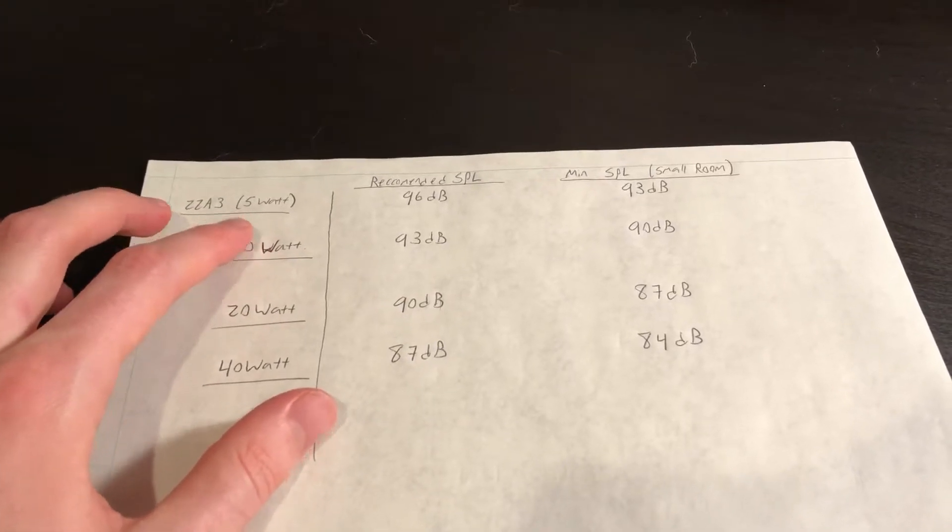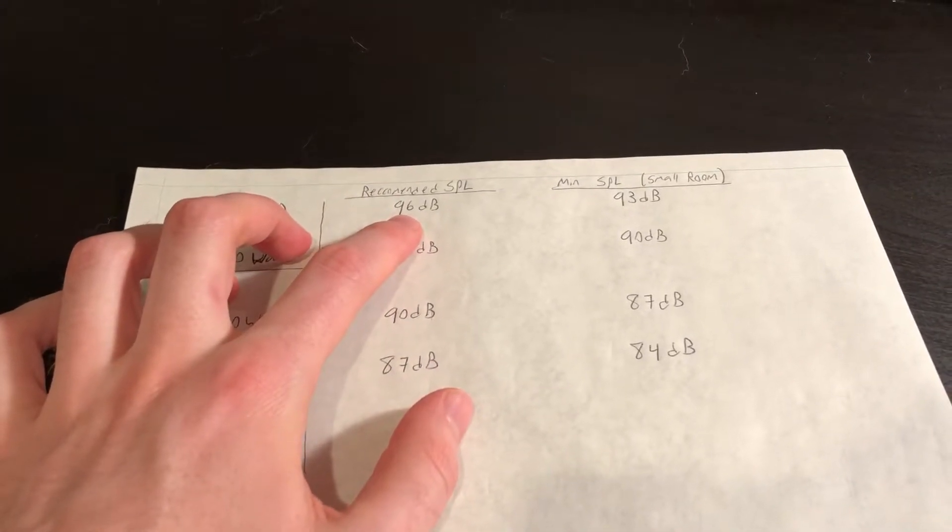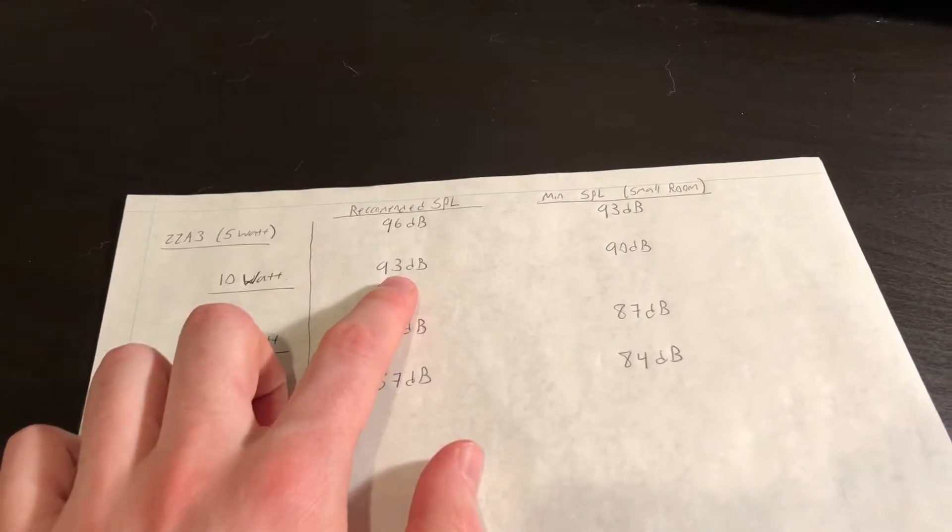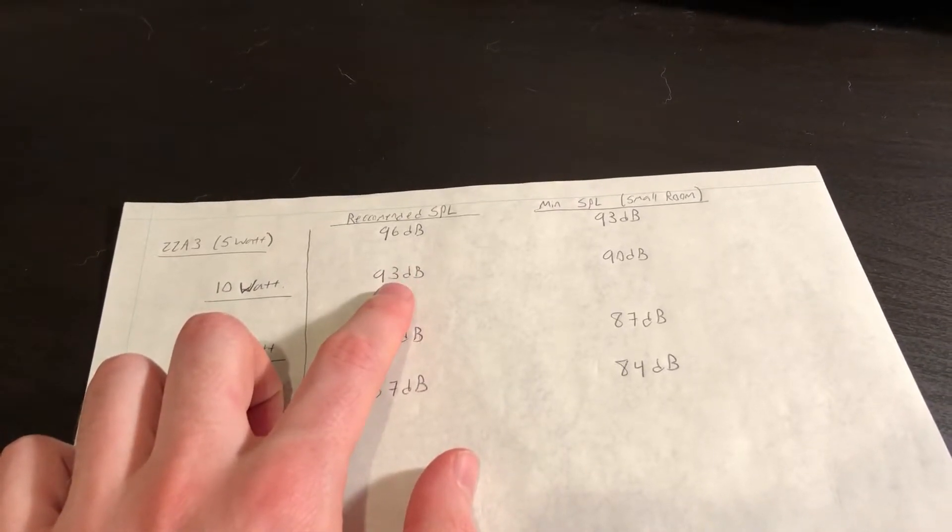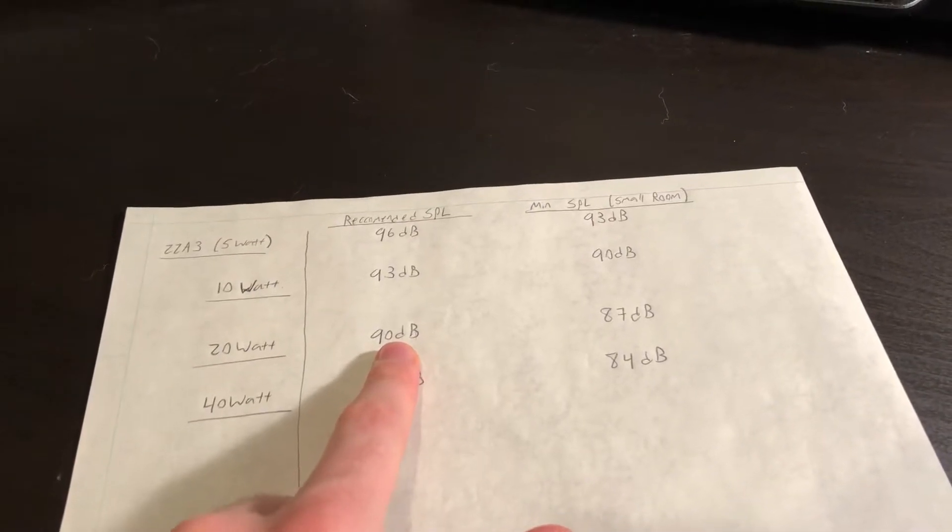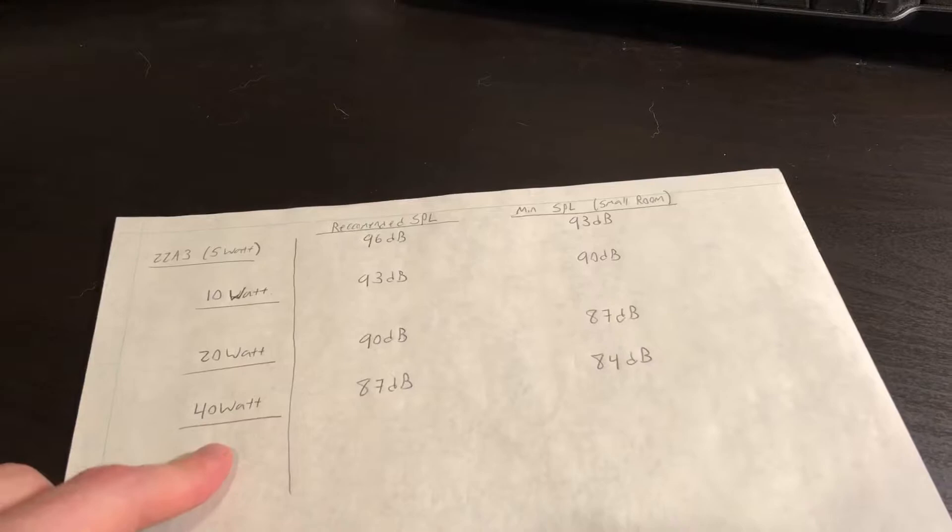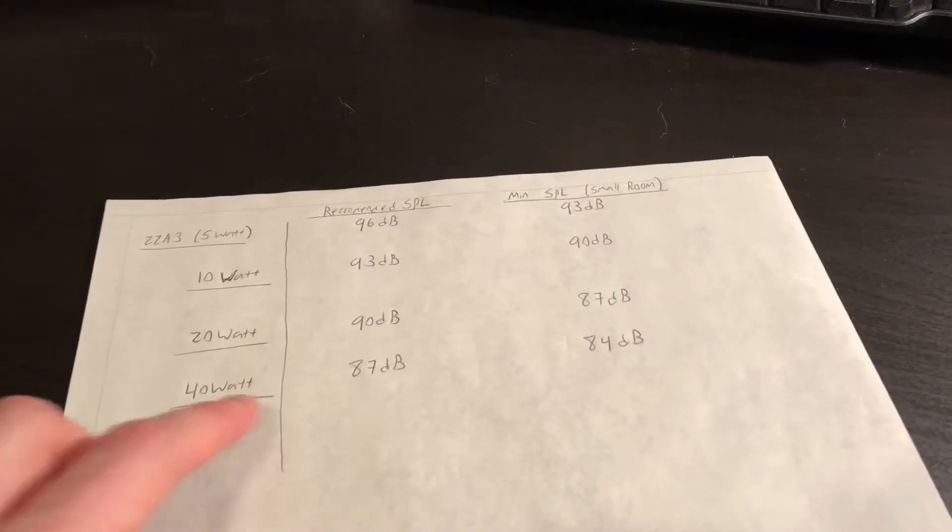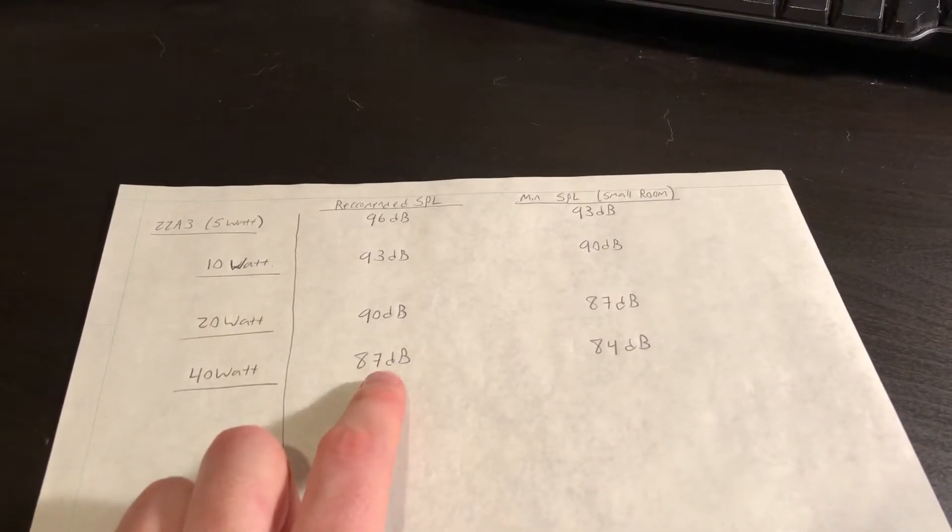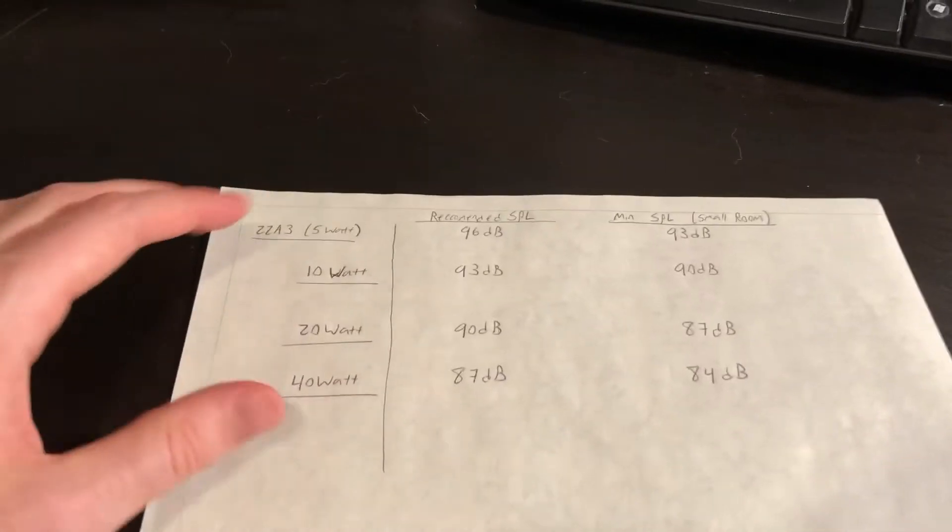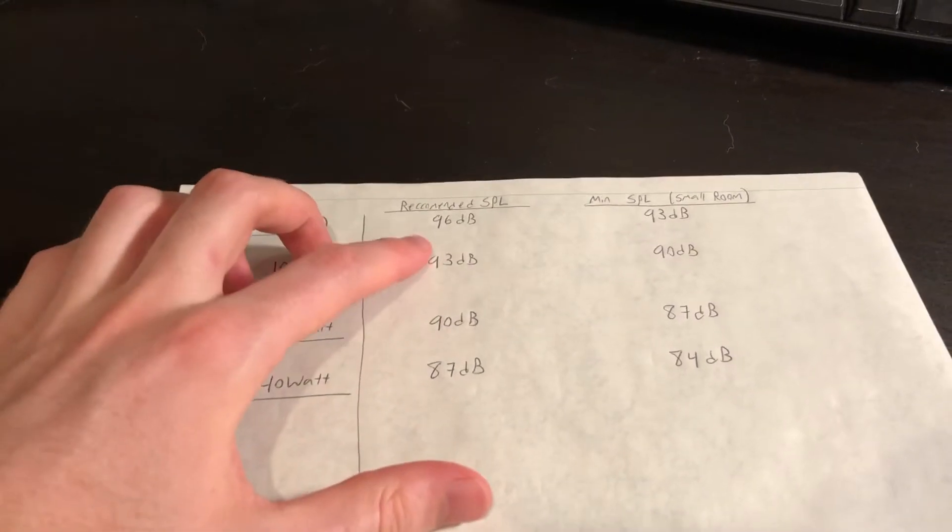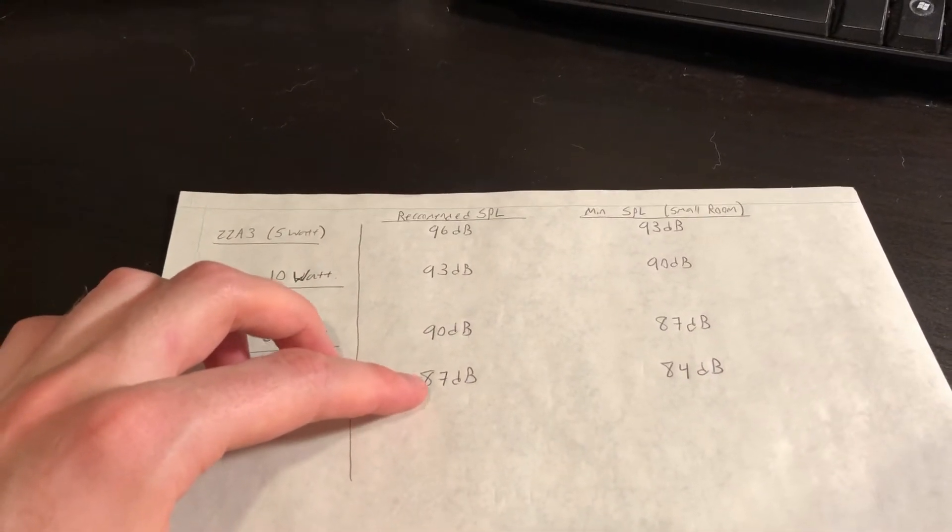So every time for a speaker we double the amplifier power, we gain about 3 dB of SPL. So for our 22A3 amplifier, 96 dB recommended minimum for a speaker. If we jump to 10 watts, we can now move to approximately 93 dB SPL minimum speaker. Double power again, we gain another 3 dB to 90 dB. And double power again from 20 to 40 watts, we can drive effectively a speaker that's around 87 dB SPL, 1 watt, 1 meter. So we need exponentially more amplifier power for only 3 dB improvements in SPL.